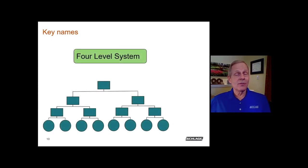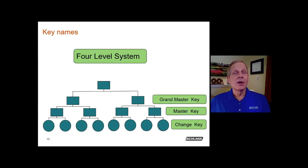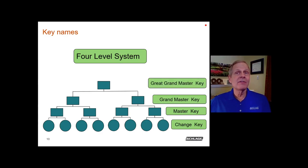In a four-level system, we reuse everything so far: change keys at the base, master keys above fitting a group of cylinders, a floor, or a department. The grand master key might fit an individual building — if you have multiple buildings, you might have a different grand master key for each. The great grand master key would fit everything on the campus or the entire facility, sitting at the top of a four-level system.